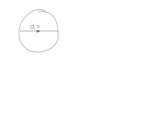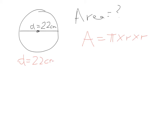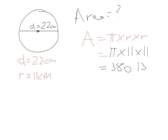Let's try another area question where we're told the diameter equals 22 centimetres. The area formula uses R, not D, so we need to find the radius first. Since the diameter is double the radius, we divide by 2, giving us a radius of 11 centimetres. Substituting into the formula: A = π × 11 × 11. Rounded to two decimal places, the answer is 380.13 centimetres squared, because it is area and not perimeter.